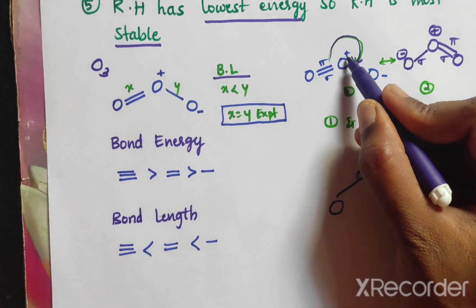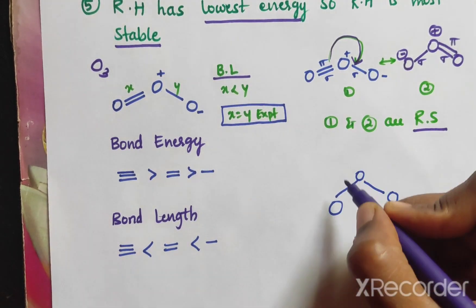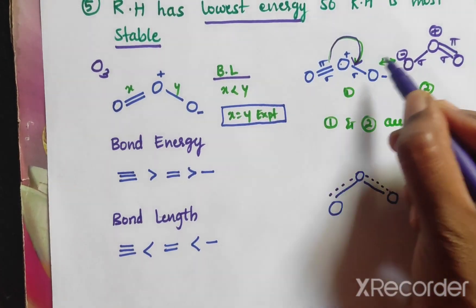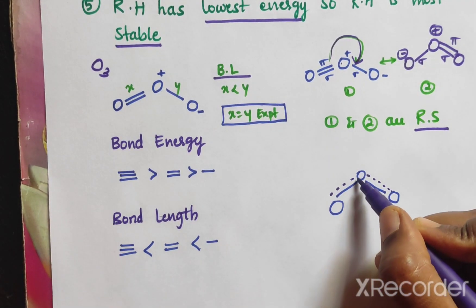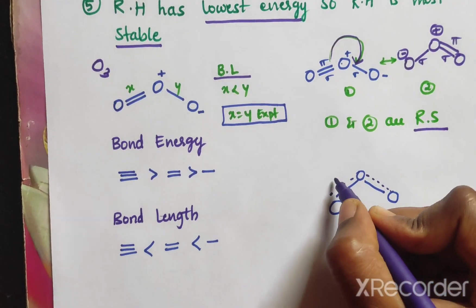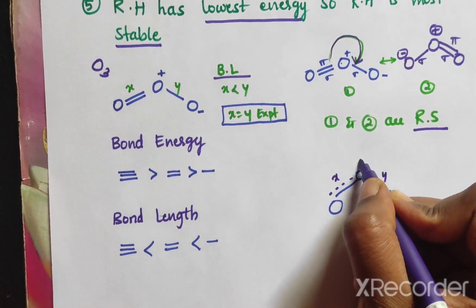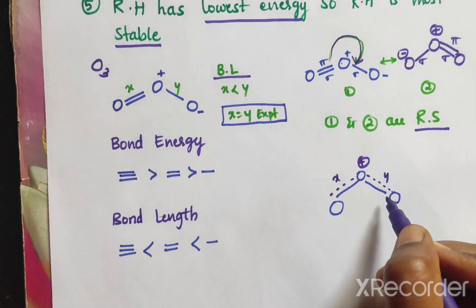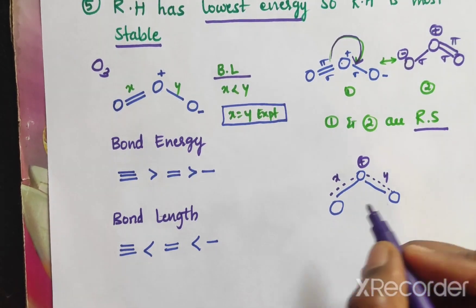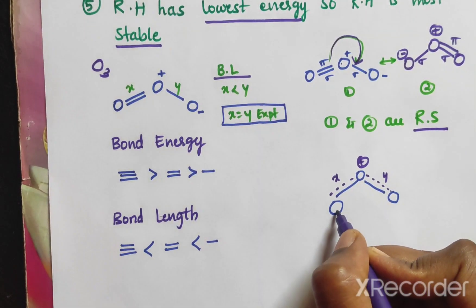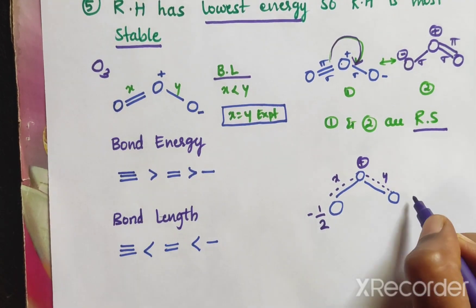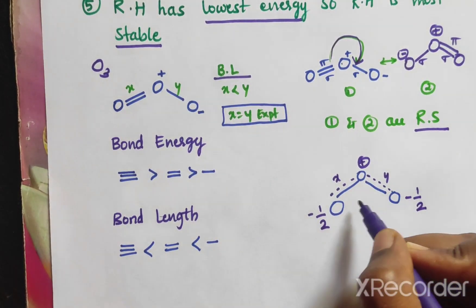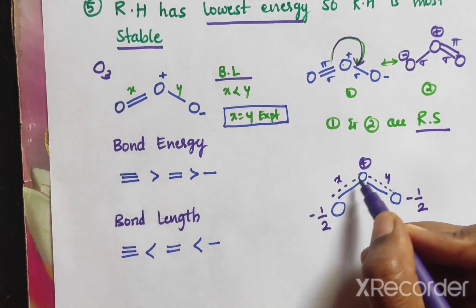The double bond is delocalizing throughout these three oxygen atoms. That means the pi bond is delocalizing throughout all three oxygens. Because of this delocalization, we get a positive charge on the central oxygen and a minus-half charge shared between the two terminal oxygens.